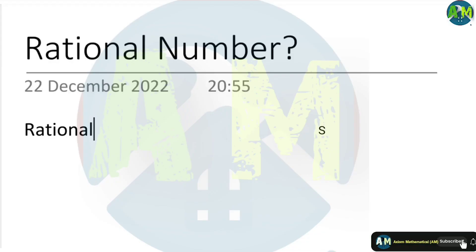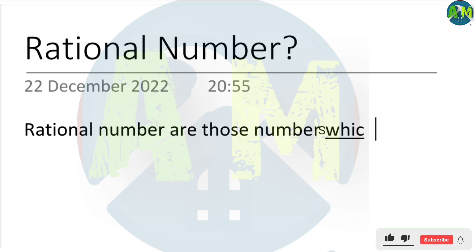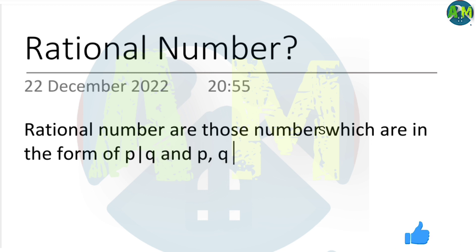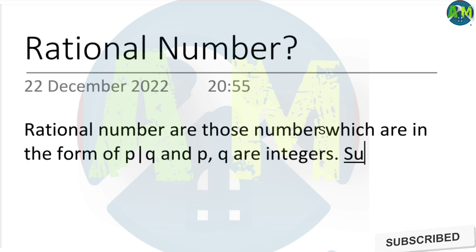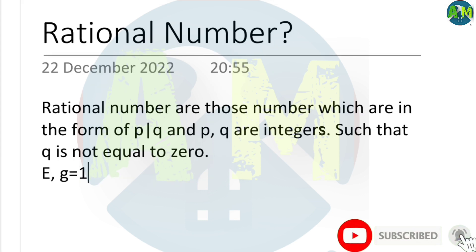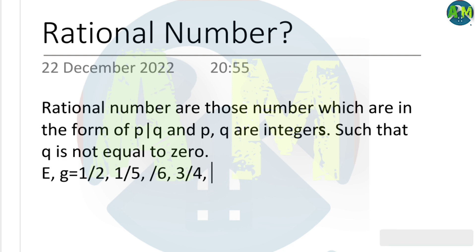Rational numbers are those numbers which are in the form of p by q, where p and q are integers such that q is not equal to zero. Some examples are: one by two, one by five, one by six, three by four, and so on.